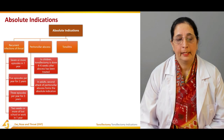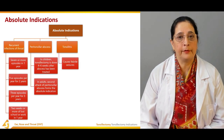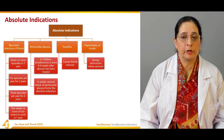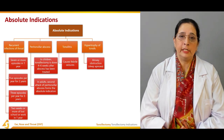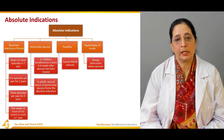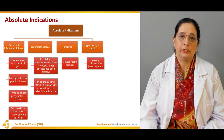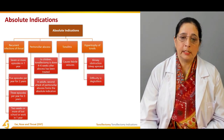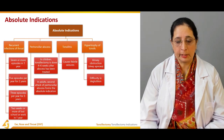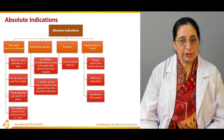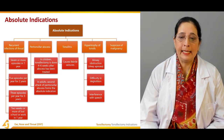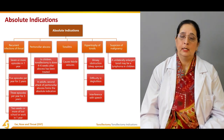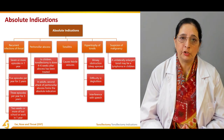Tonsillitis causing febrile seizures is an absolute indication. Hypertrophy — enlargement of the tonsil — causing airway obstruction is also an absolute indication. Hypertrophy can cause obstructive sleep apnea and airway obstruction requiring tonsillectomy. It can also cause difficulty in swallowing (deglutition) and interference with speech. Suspicion of malignancy, such as a unilaterally enlarged tonsil which may indicate lymphoma in children, is also an absolute indication.